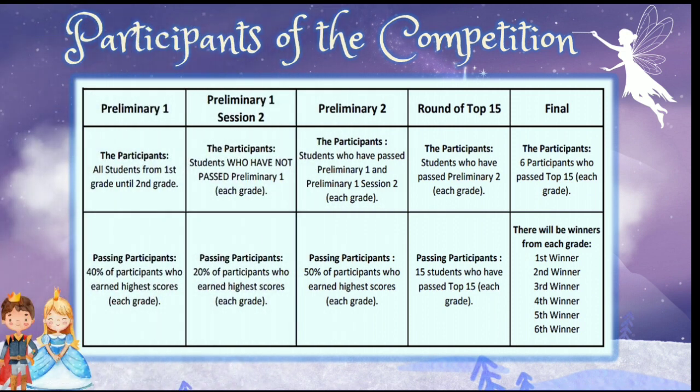For Preliminary 1, Session 1, passing participants are 40% of participants who earn the highest scores from each grade. For Preliminary 1, Session 2, passing participants are 20% of participants who earn the highest scores from each grade. For Preliminary 2, passing participants are 50% of participants who earn the highest scores from each grade.